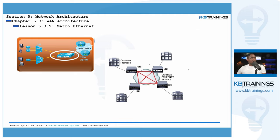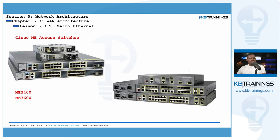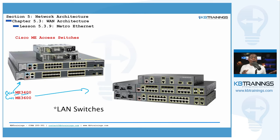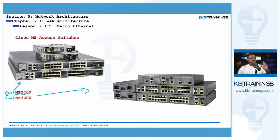Metro E switches look like regular switches but they actually behave differently. In a regular switch, when brand new, all ports belong to the default VLAN, which is VLAN 1. But in a Metro E switch every port is isolated because it's supposed to go to a different business — business A, business B, business C — so each customer's traffic remains separate.